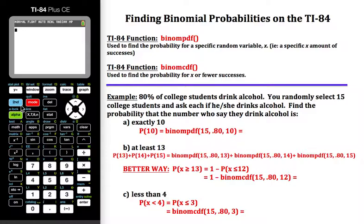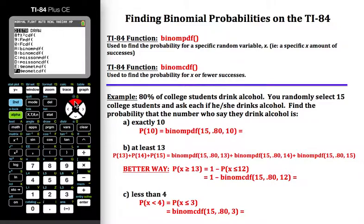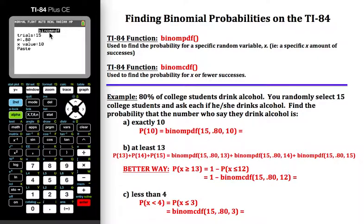I'm going to press second, then distribution. It's at the bottom of the list, so it's going to be to our advantage to arrow up — that's a shorter way to get to the binomPDF function. Then I'm going to hit enter, and it will come up using the last numbers I've put into this calculator.